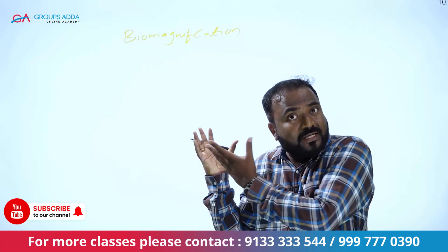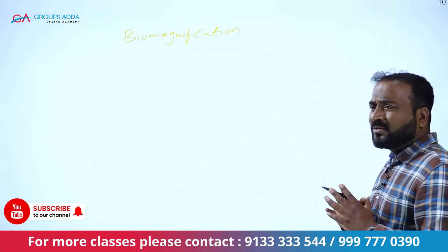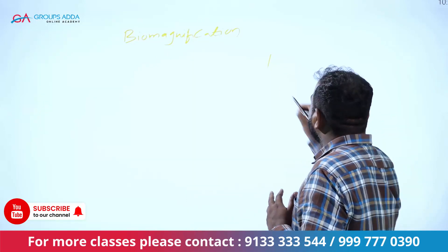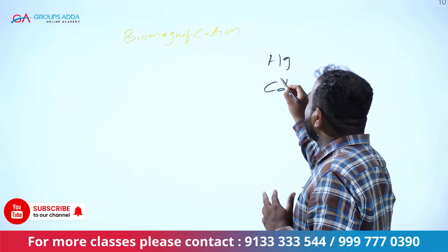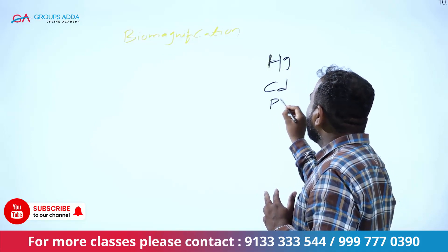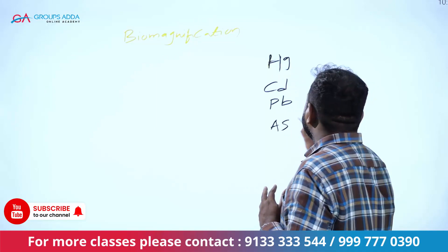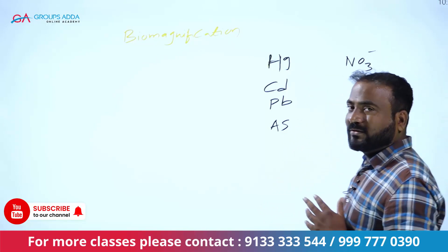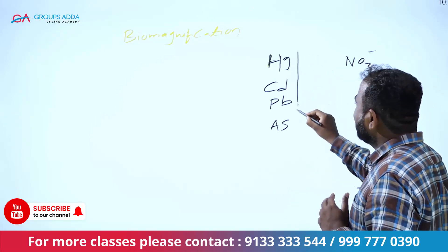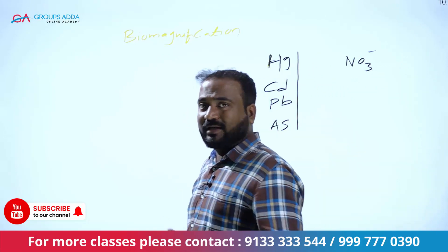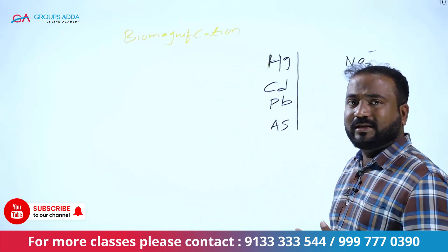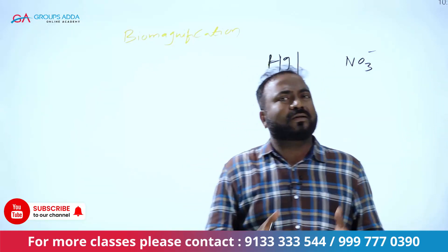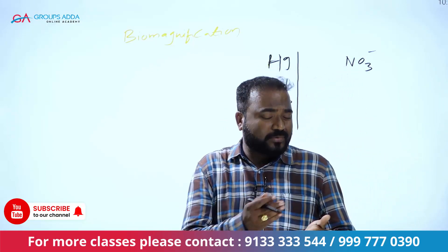What is biomagnification? First of all, there are pollutants like mercury, cadmium, lead, arsenic, and nitrates. We use fertilizers, heavy metals, and e-waste metals that release into nature — into soil and water. These then enter living organisms.